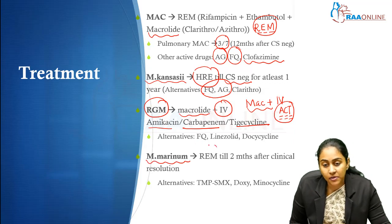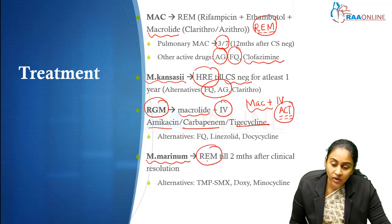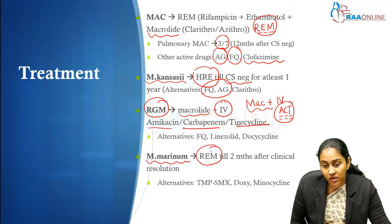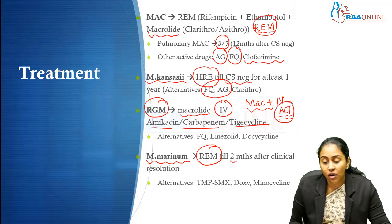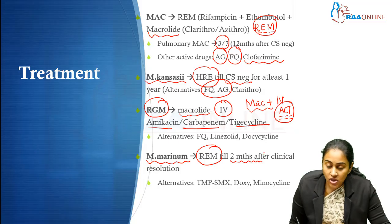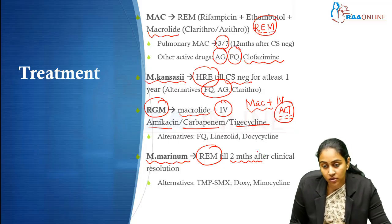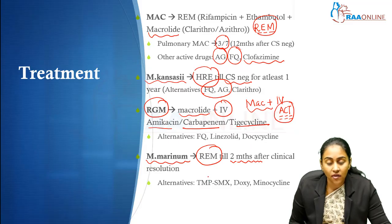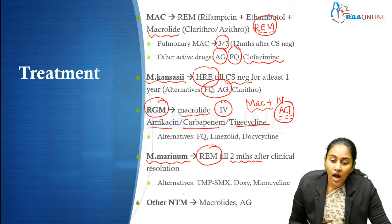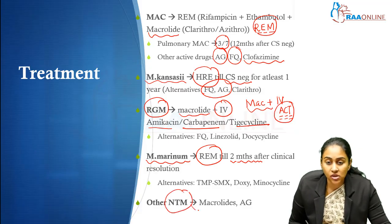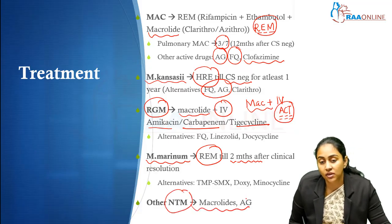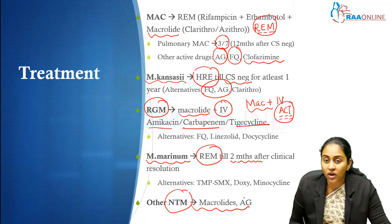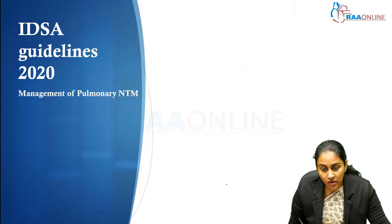Coming to Marinum, it is going to be treated just like MAC with the REM regimen, but usually treated for a shorter duration. All these skin and soft tissue infections may be treated for a slightly shorter duration — till 2 months after clinical resolution. Alternatives include cotrimoxazole, doxycycline, and minocycline. Other non-tuberculous mycobacterial infections are largely manageable with macrolide and aminoglycoside, all treated till a few months after clinical resolution.